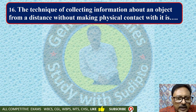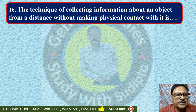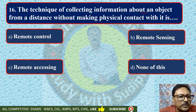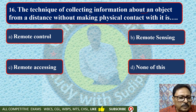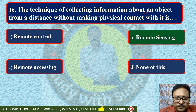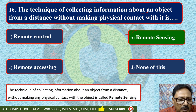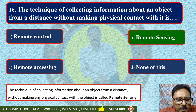The technique of collecting information about an object from a distance without making physical contact with the object is called — remote control, remote sensing, remote accessing, or none of these. It is called remote sensing. The technique of collecting information about an object from a distance without making any physical contact with the object is called remote sensing.